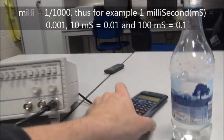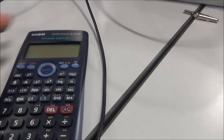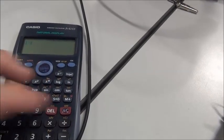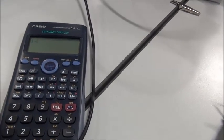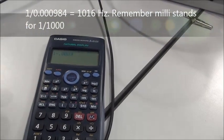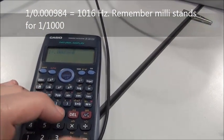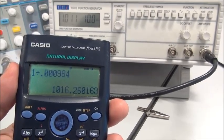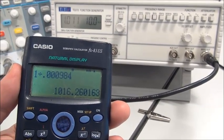Remember, milli is 10 to the minus 3. So on our calculator here, we get 1 divided by 0.000984 equals. So, the frequency of this waveform is 1,016 hertz.